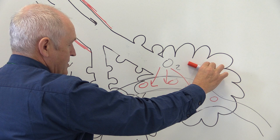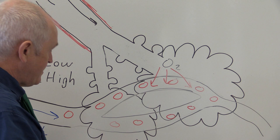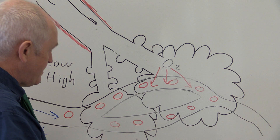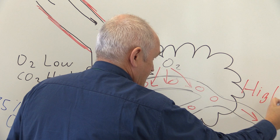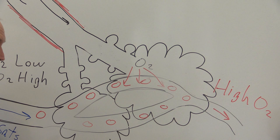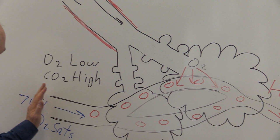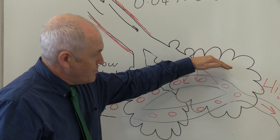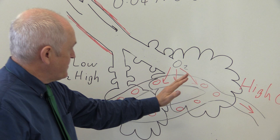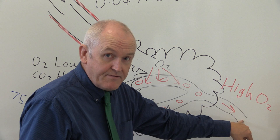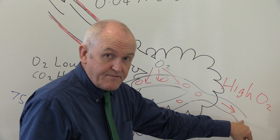Oxygen moves down its diffusion gradient from the alveolar air into the blood in the pulmonary capillary, meaning the blood leaving in the pulmonary vein is going to be high in oxygen. The blood arrived low in oxygen, moved through the pulmonary capillaries, and oxygen diffused from the alveolar air into the blood — so the blood returning to the left side of the heart is high in oxygen, typically about 98% saturated.